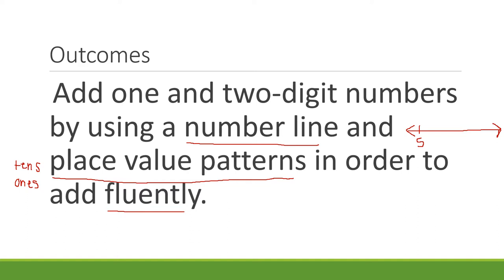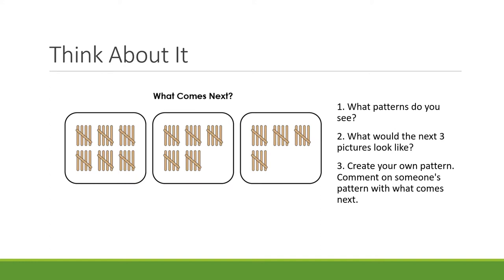Look at the patterns in the popsicle sticks in the pictures. What patterns do you see? Maybe you said that in the first group there were six groups of five. In the second group there were five groups of five, and in the third group there were only four groups of five. So the total sticks went from 30—you could figure that out by counting 5, 10, 15, 20, 25, 30.